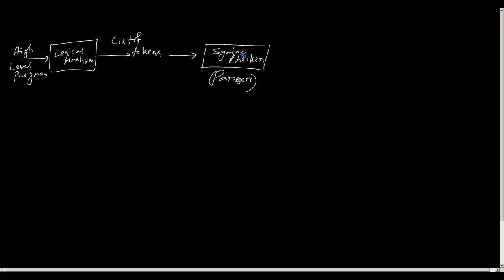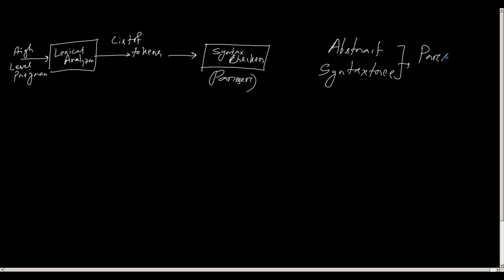The parser tries to follow the rules of the grammar of a given language and create a data structure called an abstract syntax tree or a parse tree. We have already learned in our automata theory class that, given the grammar of a language and a text string, how to create a parse tree.